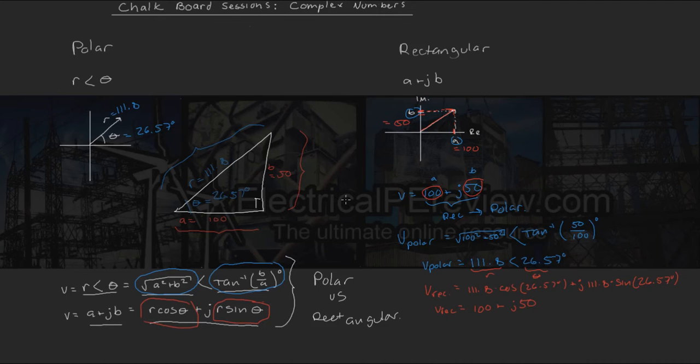So there you have it, starting with polar, going to rectangular, starting with rectangular, going to polar. This is how we go back and forth between two vectors.